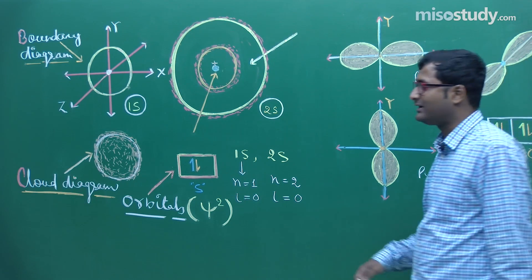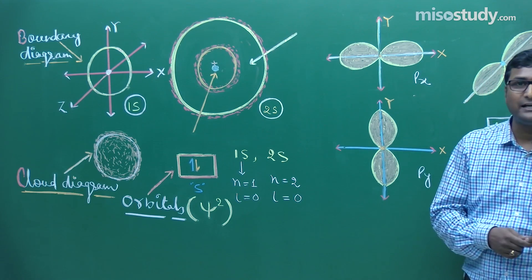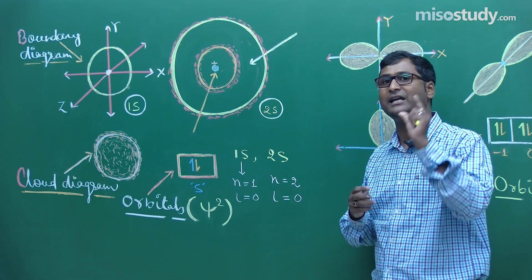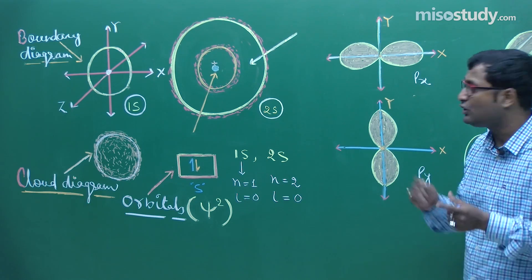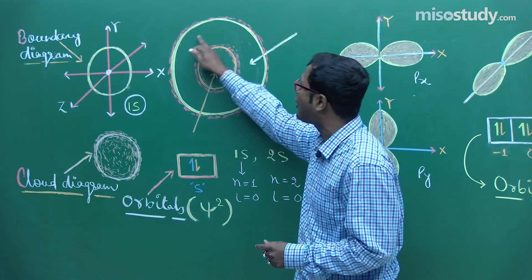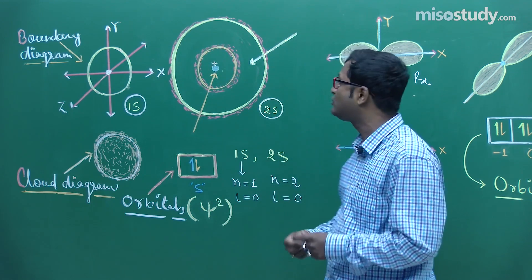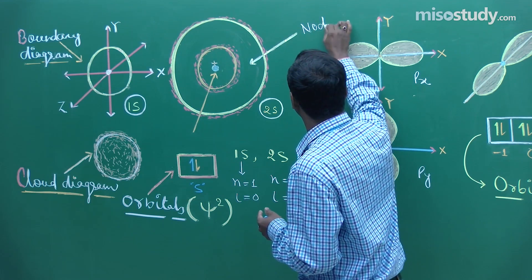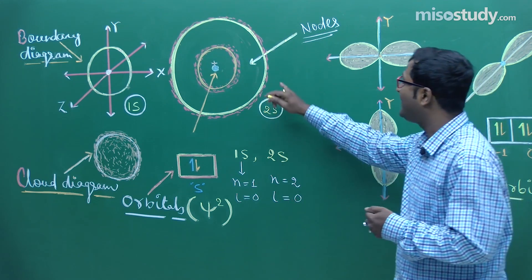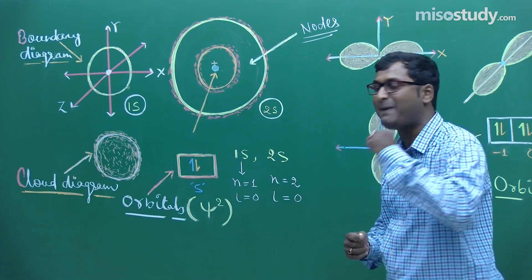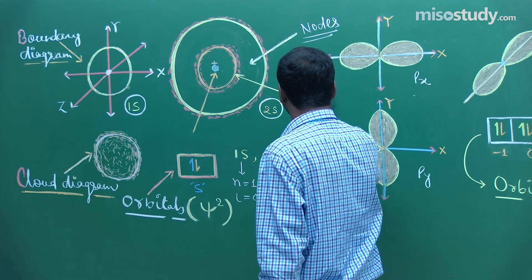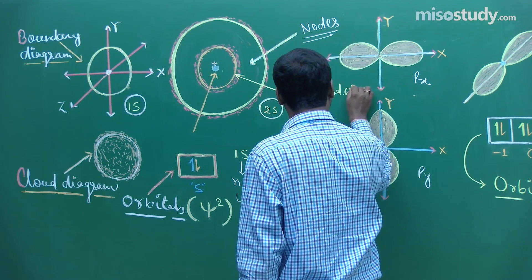Let's discuss nodes and antinodes. If anyone asks what a node is: the place or point where the probability of finding an electron tends to zero or is equal to zero. Looking at this figure, the probability of finding an electron is very low, tending to zero — that place is known as a node. An antinode is the place where the probability of finding an electron is maximum.